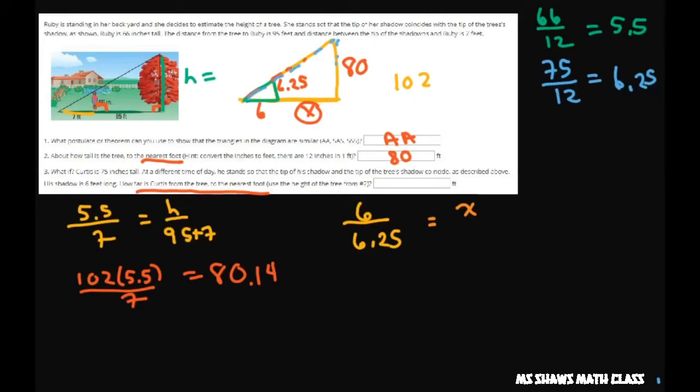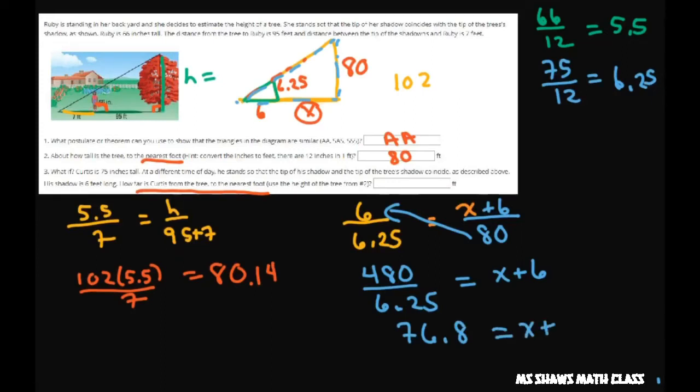The bigger triangle, so that's going to be x plus 6 is to 80. Cross multiply to get 480 divided by 6.25 equals x plus 6. So 480 divided by 6.25 is 76.8 equals x plus 6. Now we're going to subtract 6 from both sides and you're going to get 70.8 equals your x. To the nearest foot, round that up and you get 71.